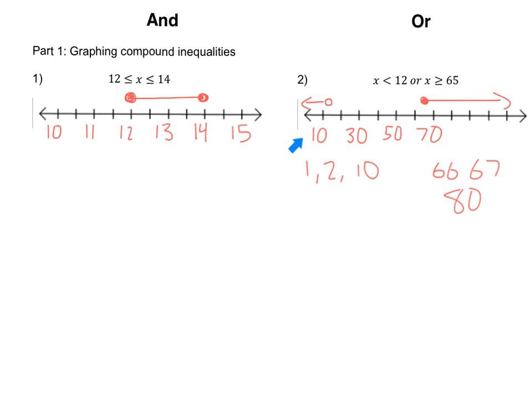In general, our or statements are arrows going in two opposite directions because we want to include solutions that are either less than a given number or greater than a given number. However, our and statements are usually between two numbers, so it has to be both greater than 12 and less than 14 or greater than or equal to 12 and less than or equal to 14, which leaves a much more limited set of values.